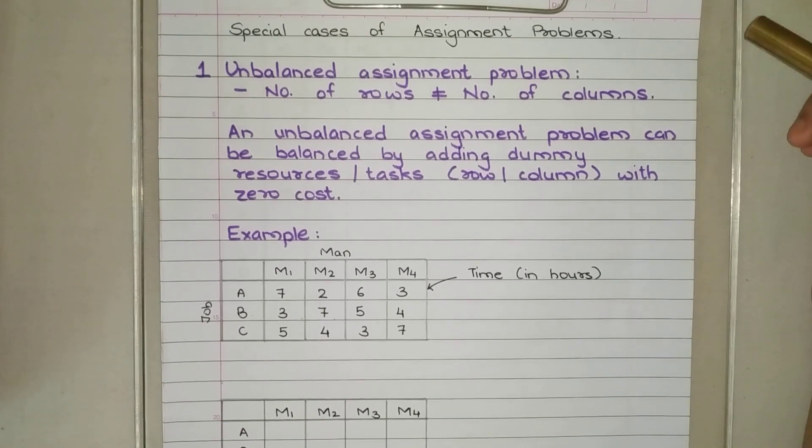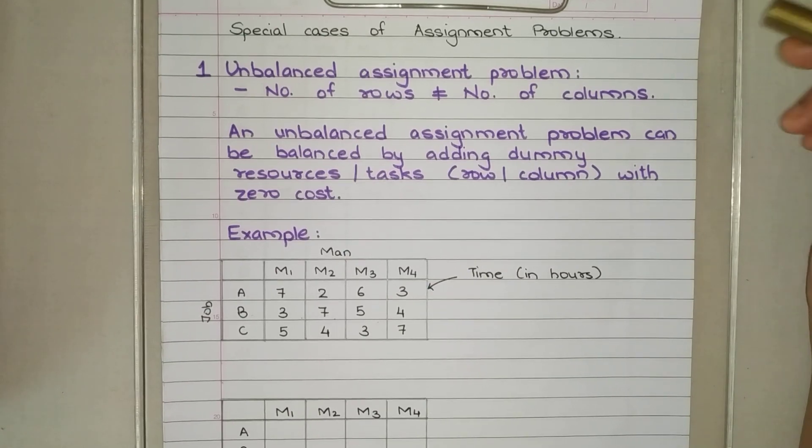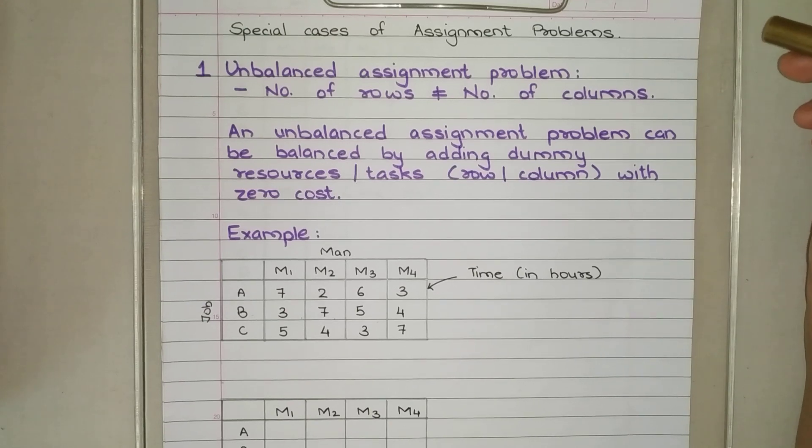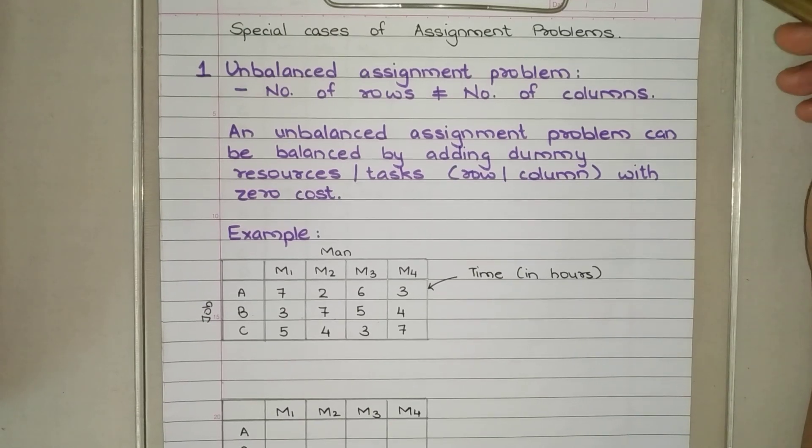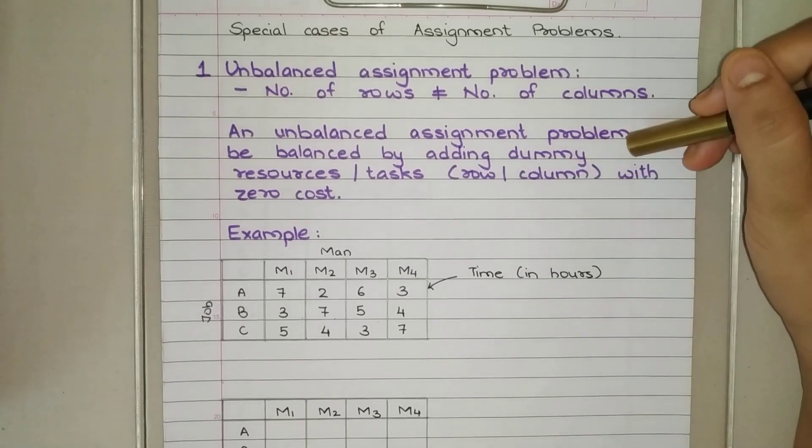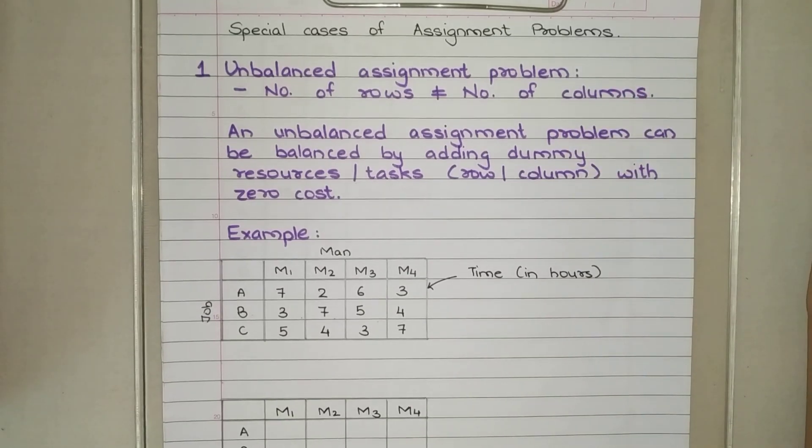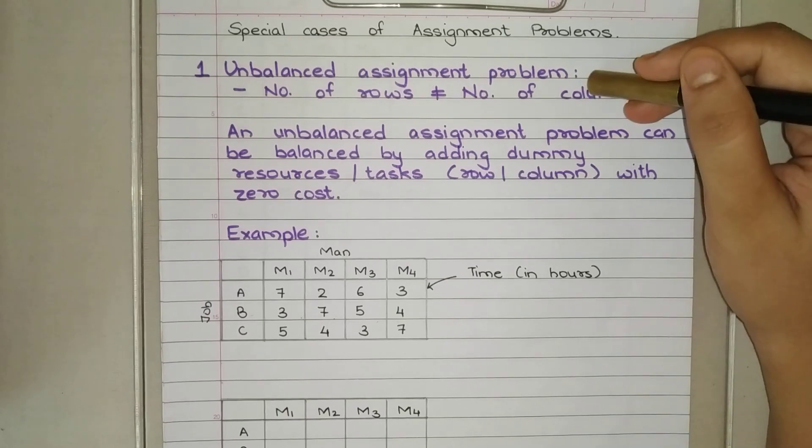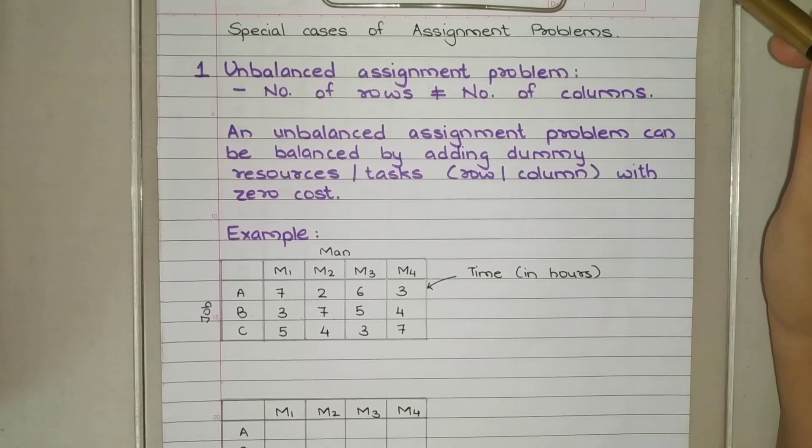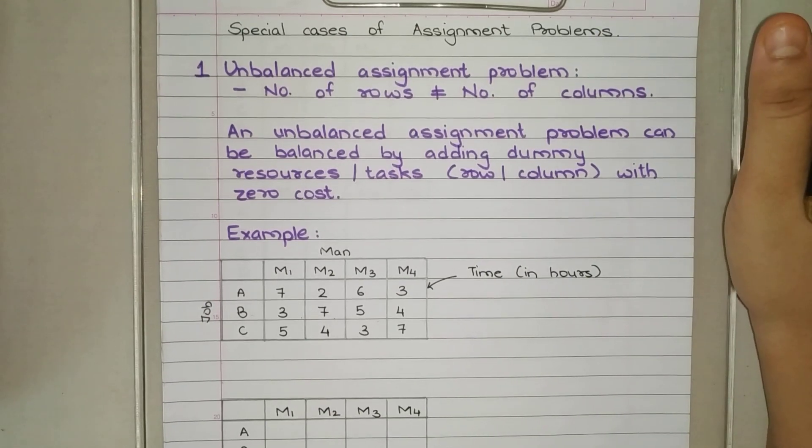First, that is unbalanced assignment problem. Now in an unbalanced assignment problem, the number of rows is not equal to the number of columns. Either jobs are more or workers are more. That type of problem we call unbalanced assignment problem, where rows and columns are not equal.